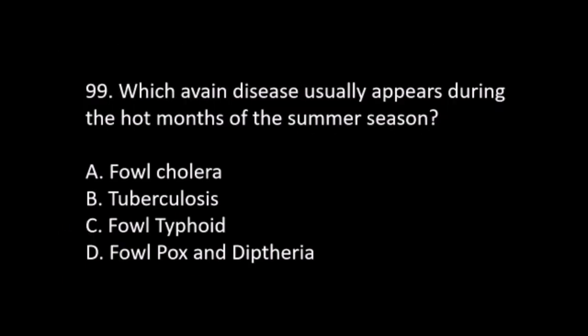Number 99. Which avian disease usually appears during the hot months of the summer season? A. Fowl cholera. B. Tuberculosis. C. Fowl typhoid. D. Fowl pox and diphtheria.